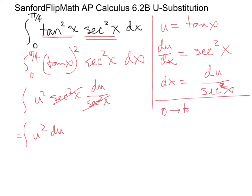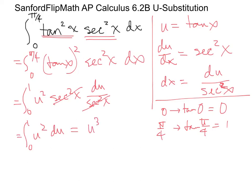For the limits: if x = 0, then u = tan(0) = 0. If x = π/4, then u = tan(π/4) = 1. So we integrate u² du from 0 to 1. The antiderivative is u³/3, evaluated from 0 to 1: 1³/3 minus 0³/3 = 1/3 minus 0 = 1/3.